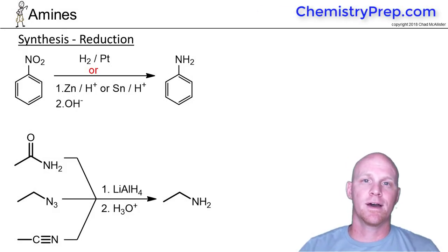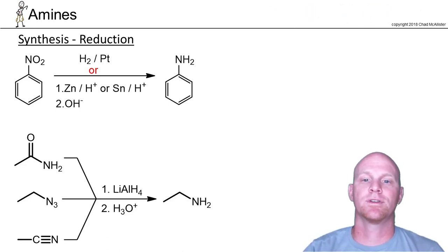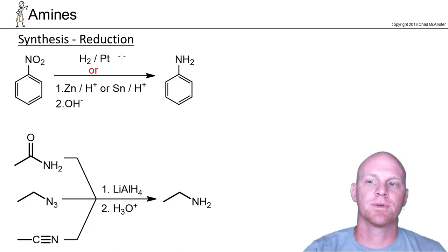We're going to dive into the myriad ways to synthesize amines, starting with mostly review reactions. Beginning with reduction, we learned in the chapter on aromatic compounds that a nitro group can be reduced to an amine group using H2/Pt, although that's not selective.